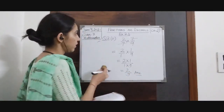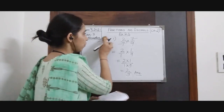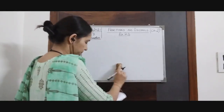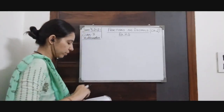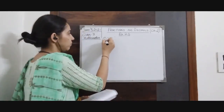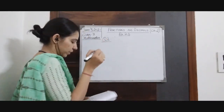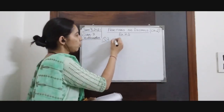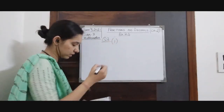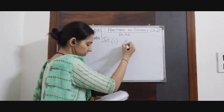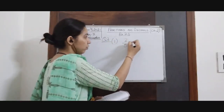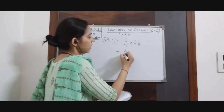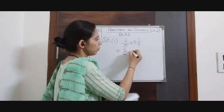Similarly we can solve all the other parts of question number 2. Question number 3 is: multiply the following fractions. We will do parts 1 and 2 first. Part 1: we have 2/5 × 5 and 1/4. We will convert the mixed fraction to improper fraction.